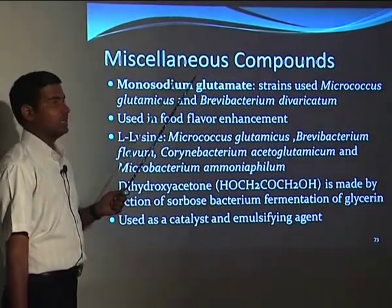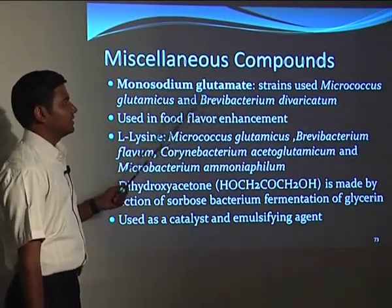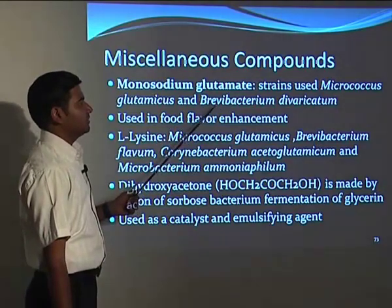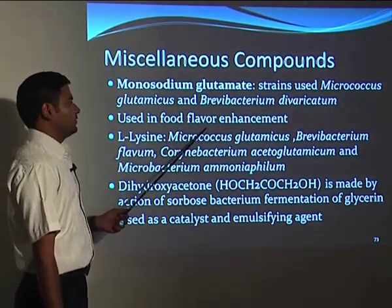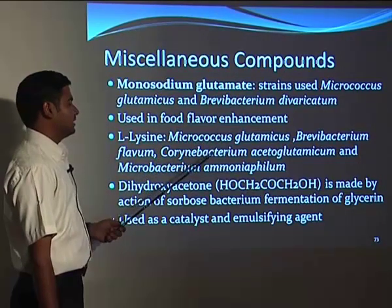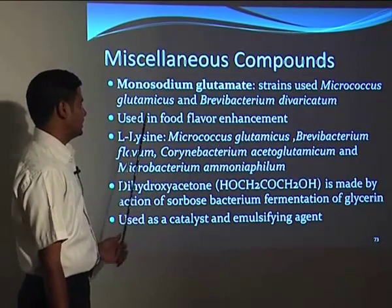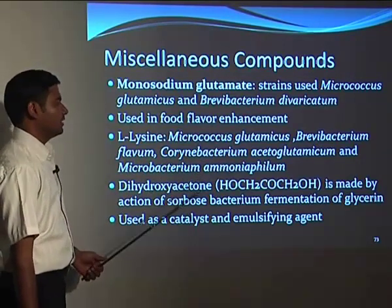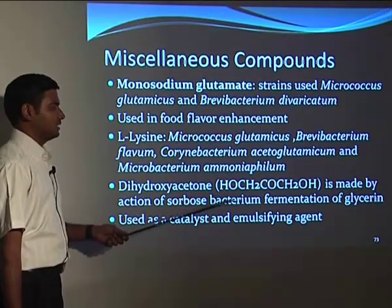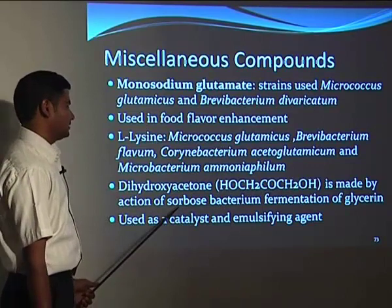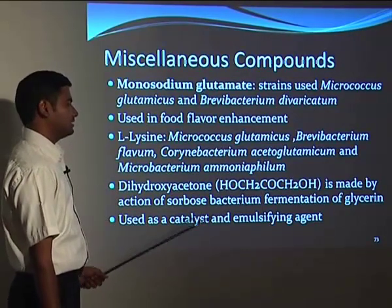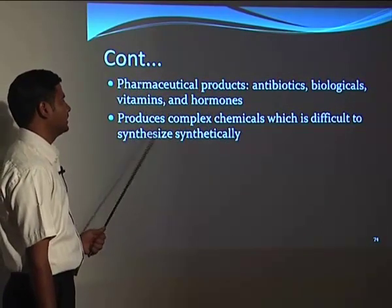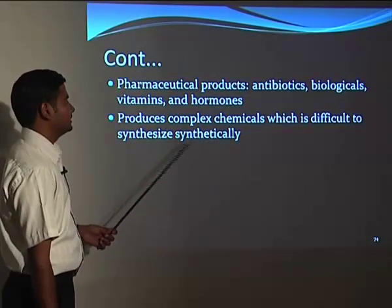Other fermentation products include monosodium glutamate, produced by Micrococcus glutamicus and Brevibacterium, and used as a food flavor enhancer. L-lysine is produced by Micrococcus glutamicus, Brevibacterium flavum, Corynebacterium acetoglutamicum, and Microbacterium ammoniaphilum. Dihydroxyacetone (HO-C-O-C-O-C-OH) is made by Sorbibacterium fermentation of glycerin, used as a catalyst and emulsifying agent. Pharmaceutical products such as antibiotics, biologicals, vitamins, and hormones are complex chemicals that are difficult to synthesize synthetically but can be produced by bacterial fermentation.